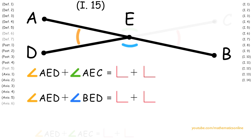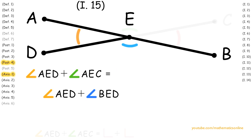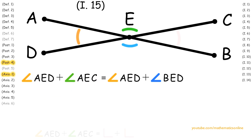Since we also have that angle AED plus angle AEC are congruent to the sum of two right angles, then by Axiom 1 and Postulate 4, we have angle AED plus angle AEC is congruent to angle AED plus angle BED.